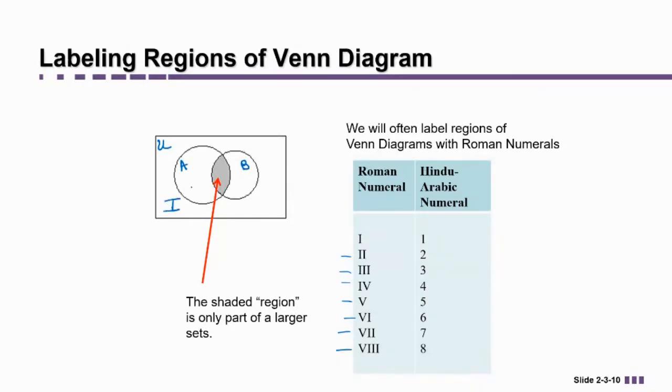So for example, I might label this Roman numeral 1, Roman numeral 2, Roman numeral 3, Roman numeral 4. I just do this so I can talk to you about the region so the region has a kind of a name.